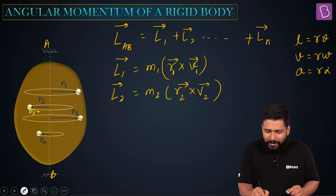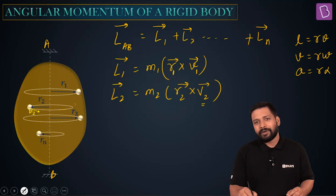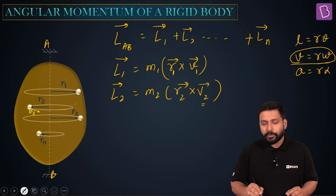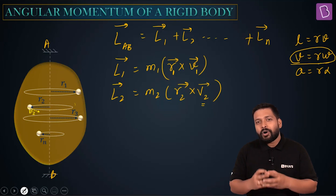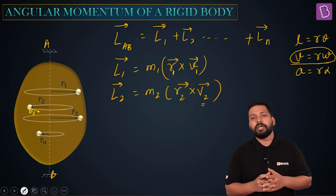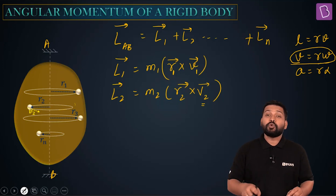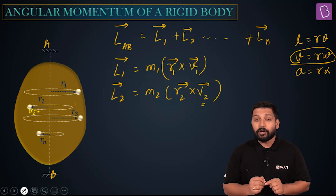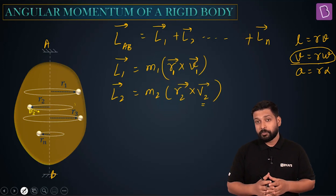Now we can replace V with R times omega, since each individual particle moves in a circle. What is special about omega? The value of linear velocities V1, V2, V3 could be different for each individual particle, but the value of angular velocity is going to be the same for all of them.